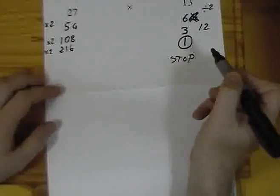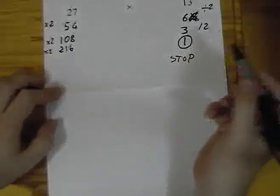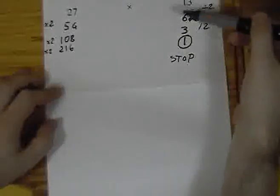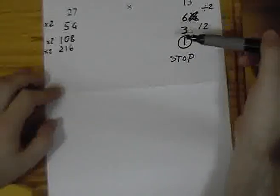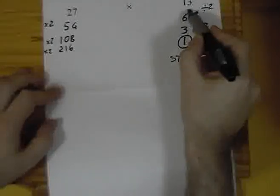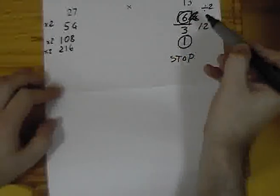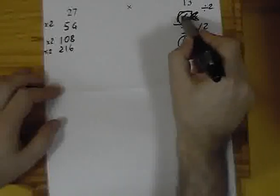We're almost there. Now, we have to go to step number 2. Step 2 is very easy. On the right column, you just find out all the even numbers. Here, there's only 1, only 1 even number, which is 6.